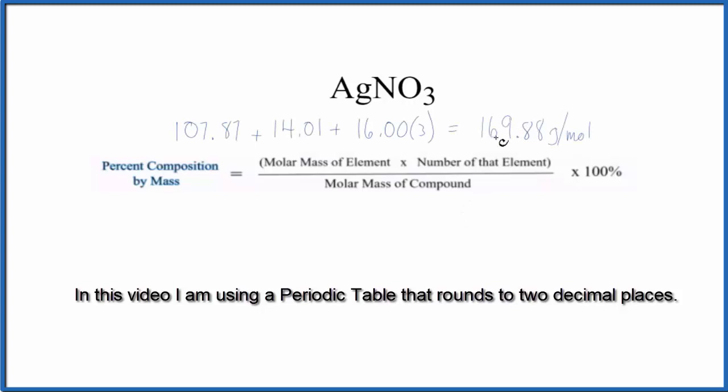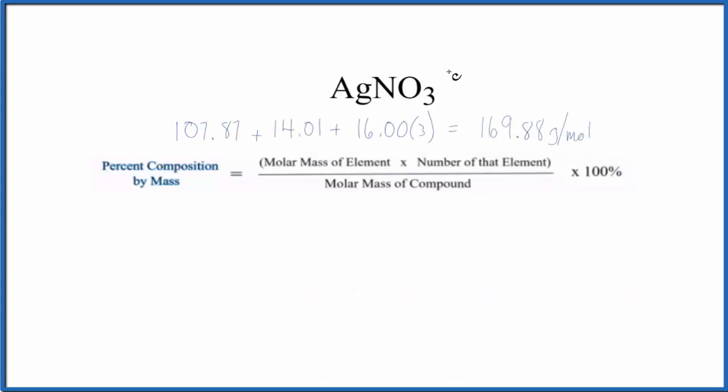So we have 169.88 grams per mole for the molar mass for the AgNO3. Let's find the percent composition by mass for each element here in silver nitrate.